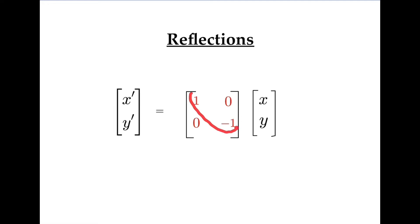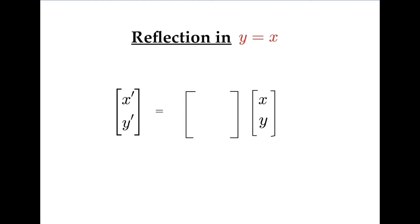Reflection in the line y equals x is different because it affects both x and y values at the same time. In this case, xy is mapped to yx. The two-by-two matrix that gives us this mapping has zeros on the main diagonal and ones elsewhere.